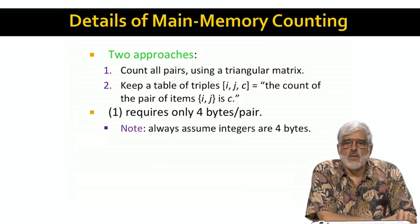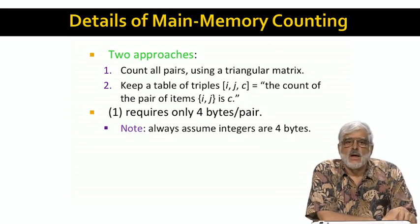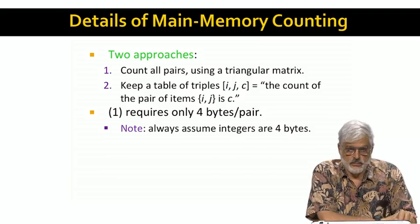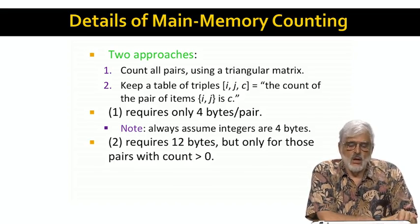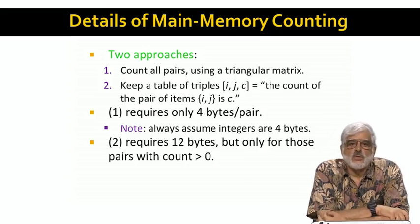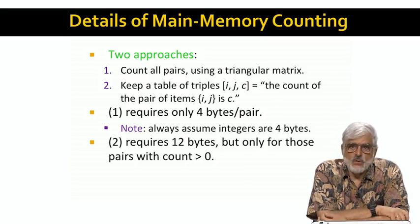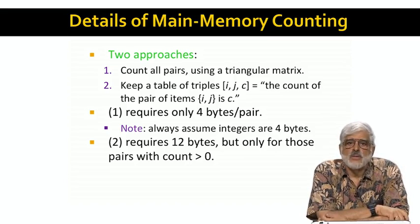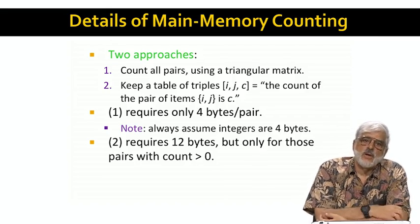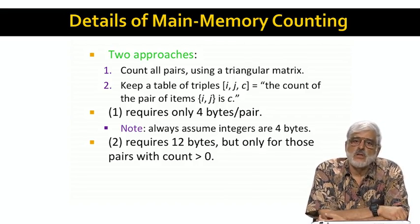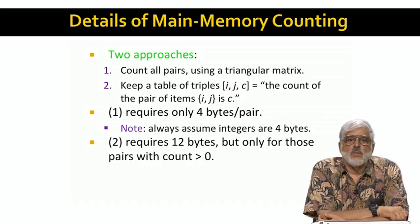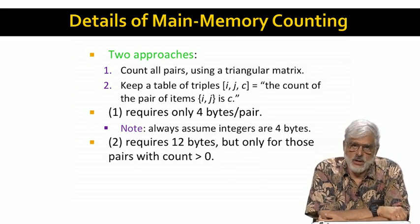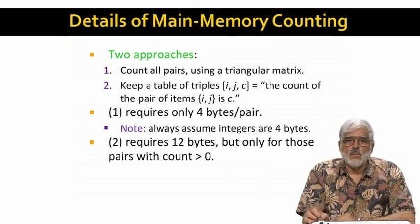I'm going to assume from here on that integers require four bytes, even though if, as we just mentioned, it is okay to keep them small, then fewer bytes could be okay. It is even possible in some circumstances that you need more than four bytes, but I'm not going to worry about that case either. On the other hand, if we keep a table of triples, then we need 12 bytes per pair, four each for i, j, and c. But the advantage is that a pair only needs a record if it appears in at least one basket. As a result, the space requirement for the tabular approach is 12 bytes per existing pair, but not per possible pair.